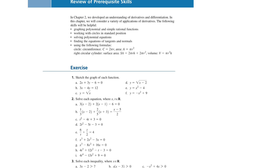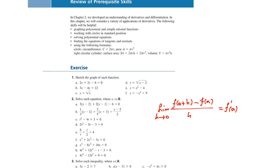In Chapter 1, we talked about limits and continuity. We focused on the instantaneous rate of change, and we showed that the limit of f(a+h) minus f(a) over h as h approaches 0 is the same as the instantaneous rate of change of the function y equals f(x) at x equals a. The slope of the tangent line and the instantaneous rate of change at x equals a are the same.